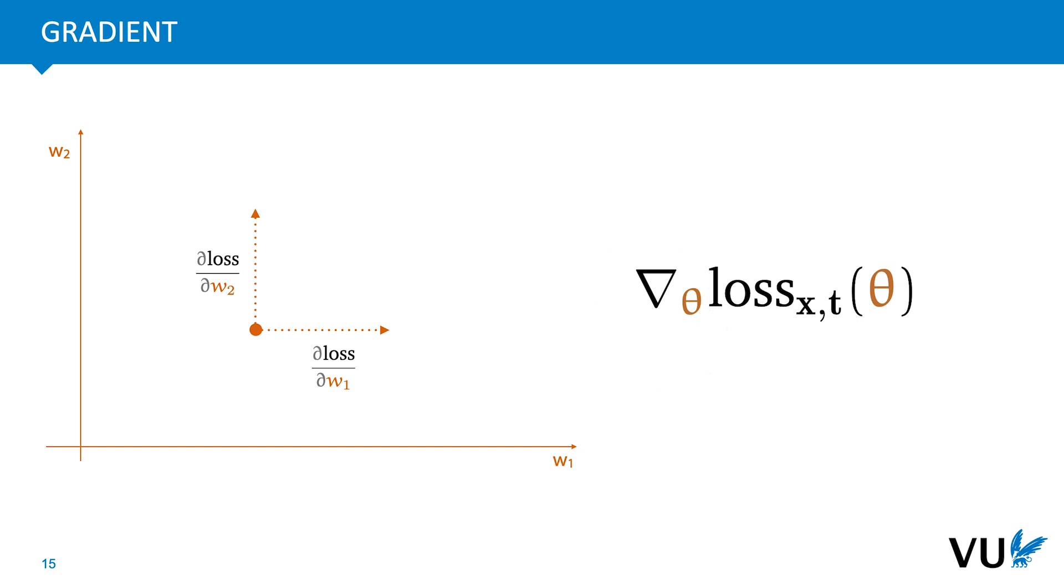If our input space for our function has multiple dimensions, as in the case of the model space, which is the input to the loss function, then we can simply take a derivative with respect to each input separately, treating the others as constants. This is called a partial derivative. The collection of all partial derivatives taken together is called the gradient, and it's indicated by this upside-down triangle called a nabla. The partial derivatives of the loss surface, one for each model weight, tells us how much the loss falls or rises if we increase each weight, that is, if we move in a particular direction along the axis of the model space.